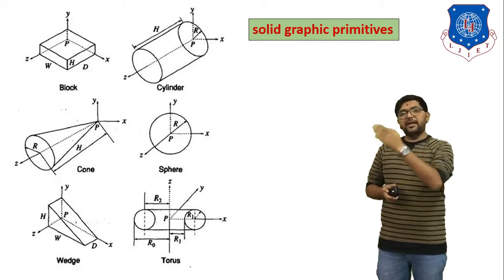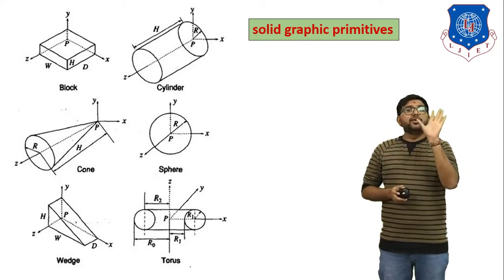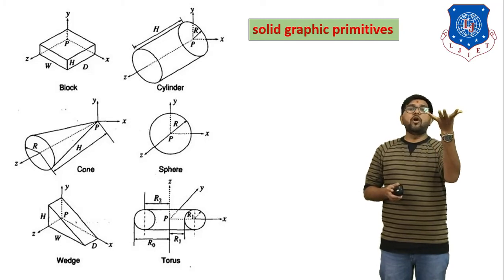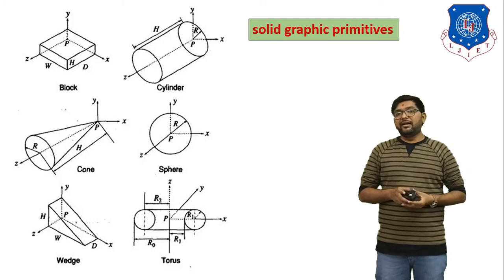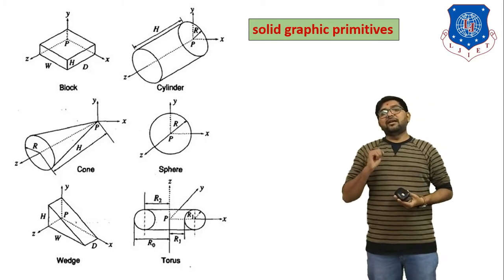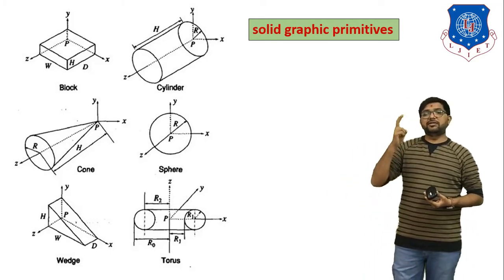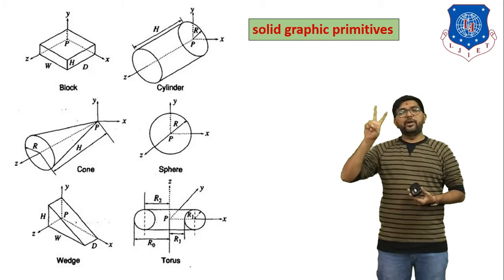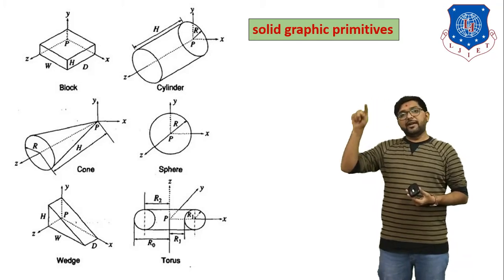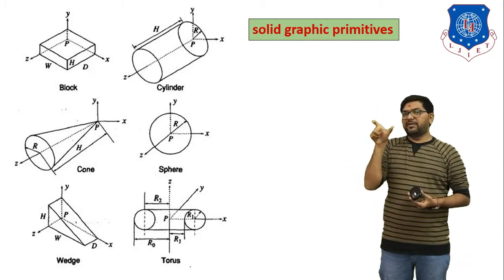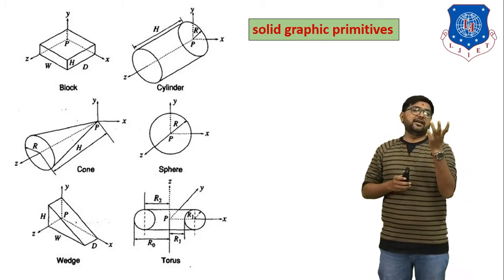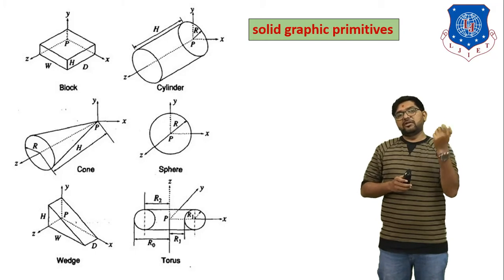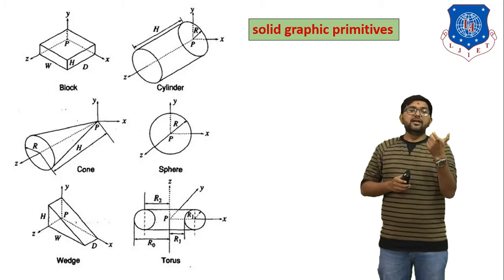If you give three input values, you can generate a ready-made block in the modeling software. The second primitive is the cylinder. In a cylinder you need two input values: first, the radius, and second, the length of the cylinder. If you give radius and length, the software automatically generates one cylinder. That is also a method of CSG.